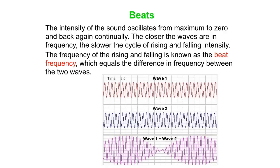The beat frequency is equal to the difference in frequency between the two waves. For instance, if one happened to be 400 Hz and the other one was 405 Hz, then you would hear a sound which sounded like a 402.5 Hz sound, but it would rise and fall at the rate of 5 Hz — you'd hear 5 cycles per second, a kind of wah-wah-wah noise. That's what you listen to when you're listening to beats.